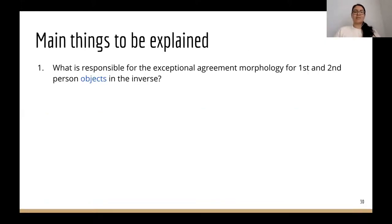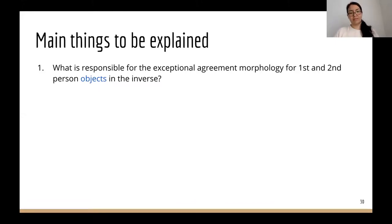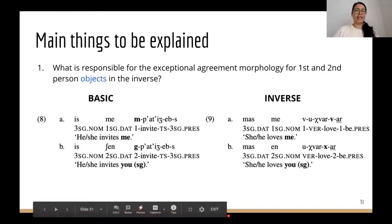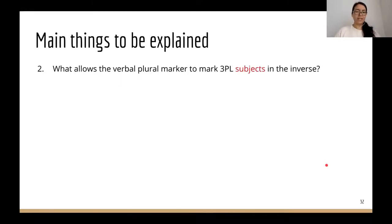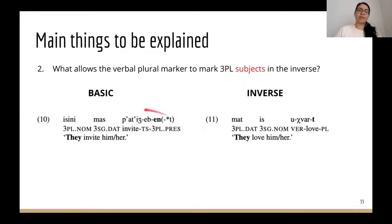These puzzles to be explained are: first, what is responsible for the exceptional agreement morphology for first and second person objects in the inverse—why do we get complex verb forms rather than simple person prefixes? And second, what allows the verbal plural marker to mark third plural subjects in the inverse but not the basic, with the added restriction that the object also be third person?